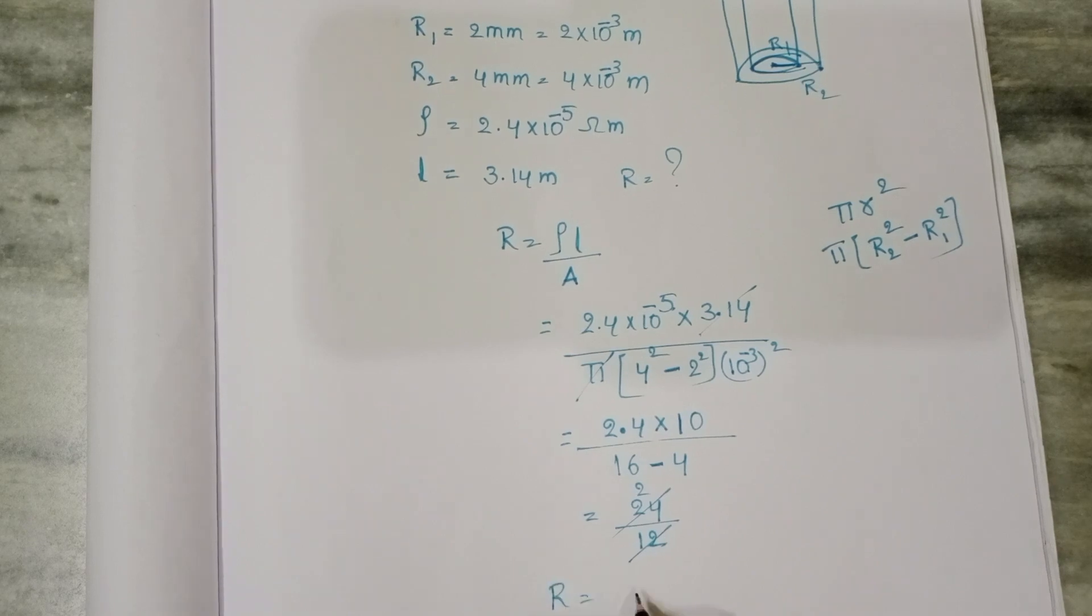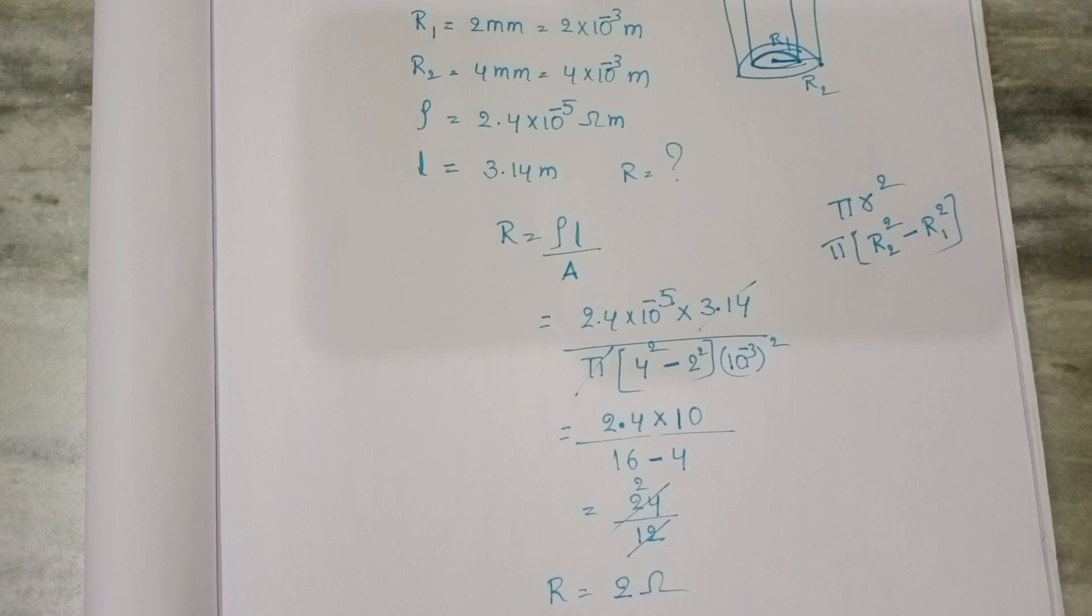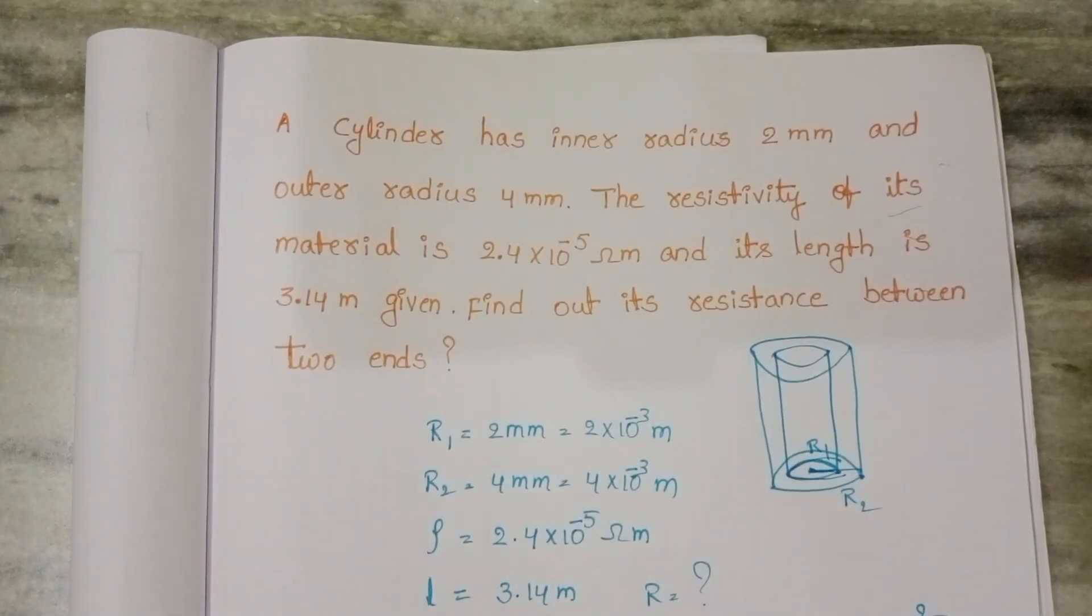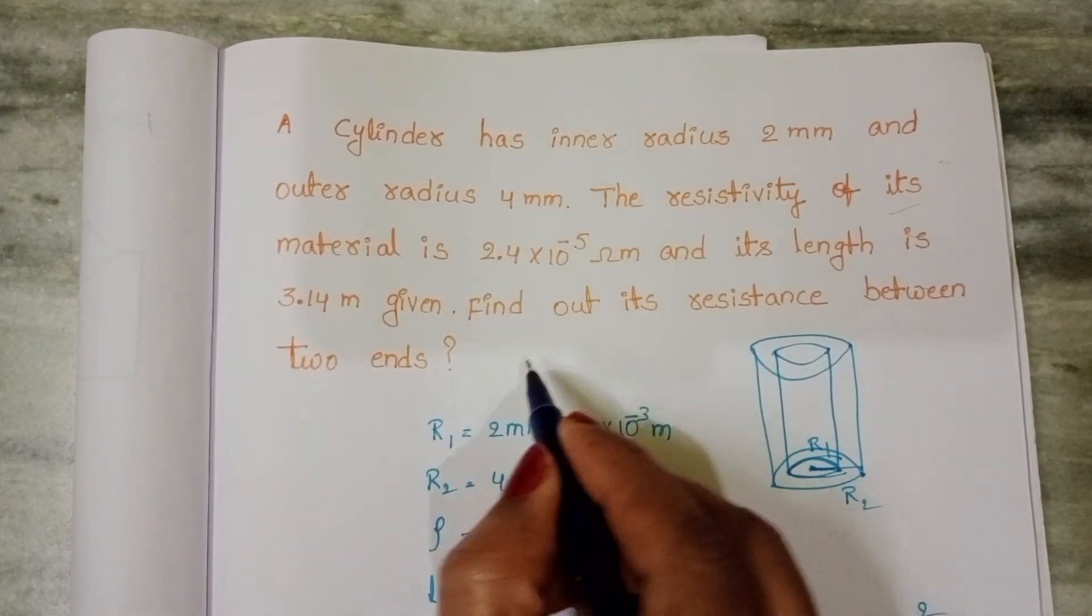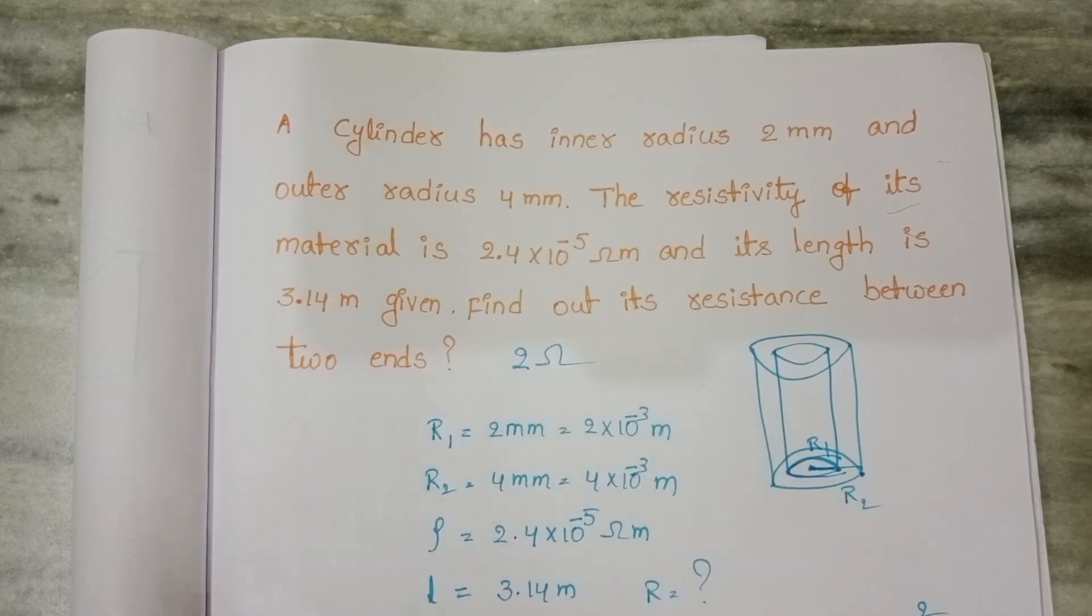So resistance equals 2 ohm. This is integer type question. Resistance between the two ends is 2 ohm.